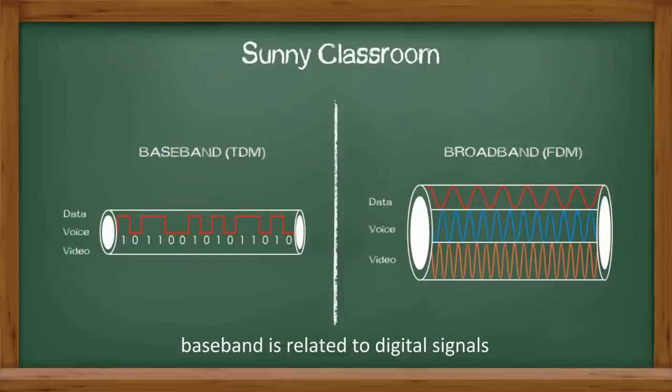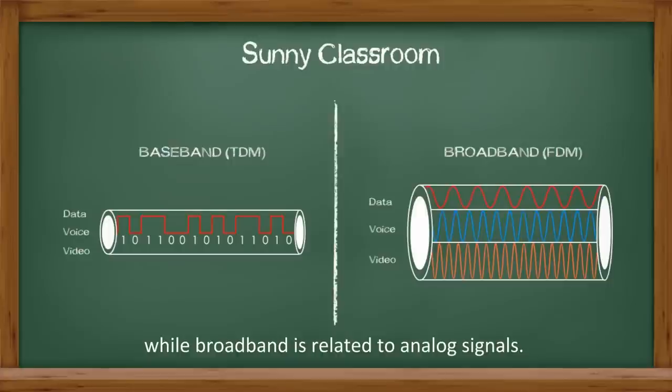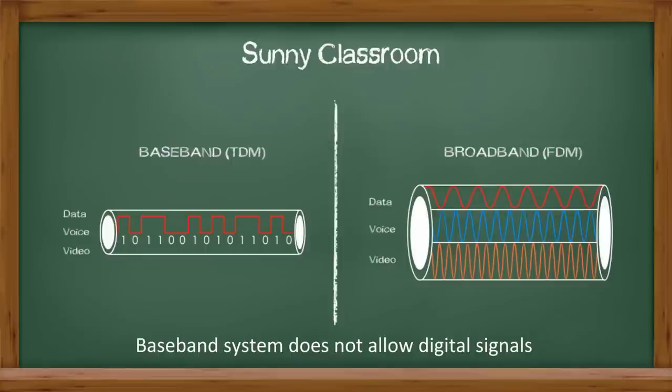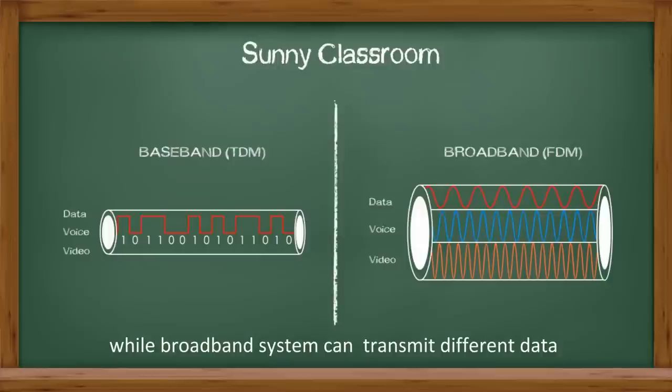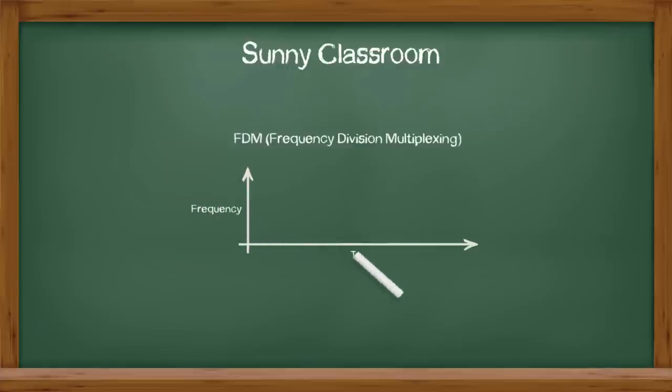In summary, baseband is related to digital signals while broadband is related to analog signals. Baseband system does not allow digital signals to share one media simultaneously, while broadband system can transmit different data side by side at the same time.